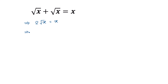Taking square to both sides, we will get 2 times square root of x, whole square, is equal to x square. So 2 times square root of x, whole square, is equal to x square.